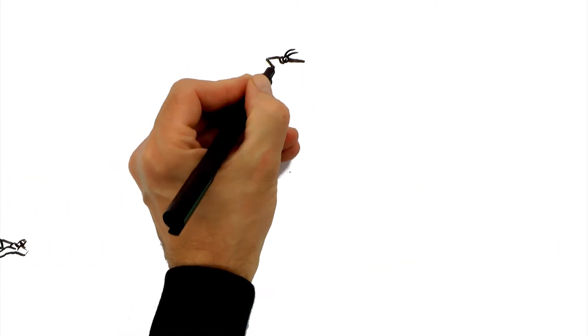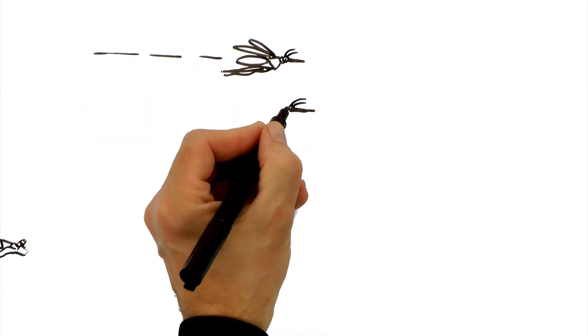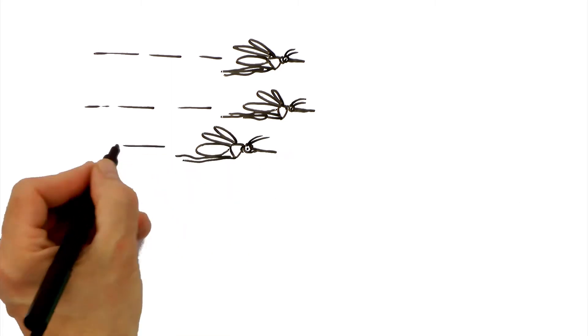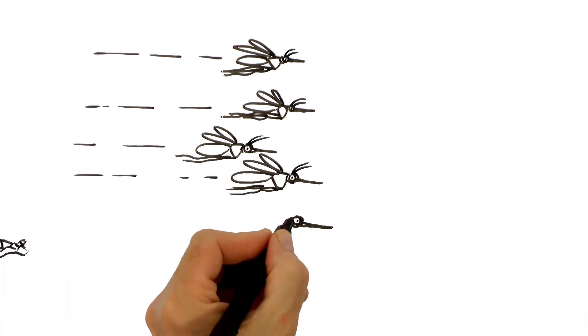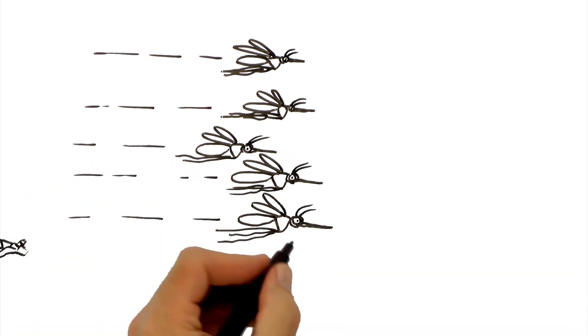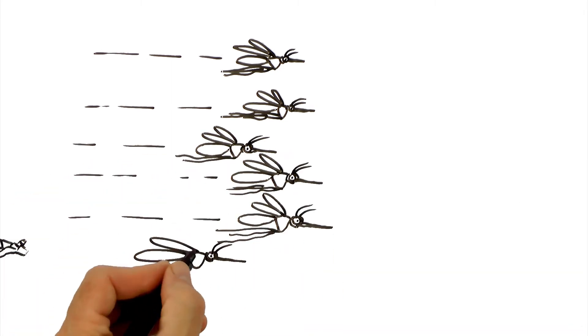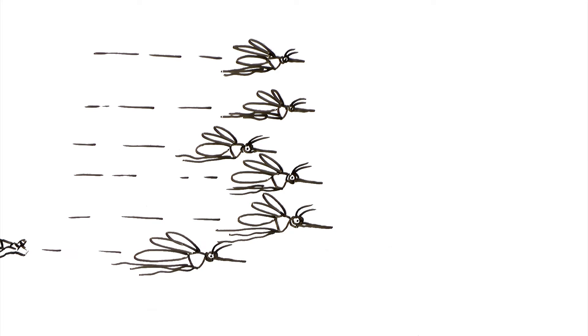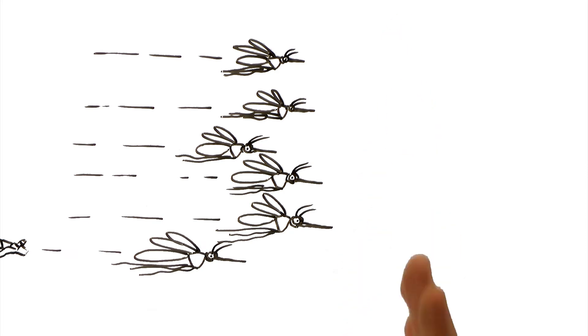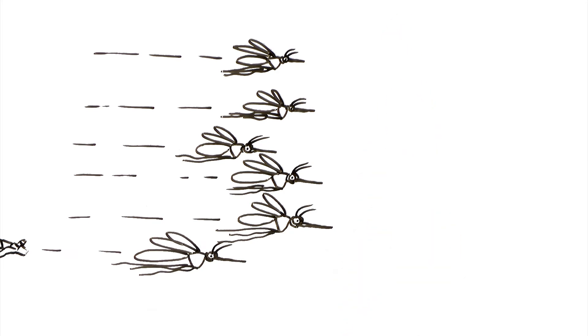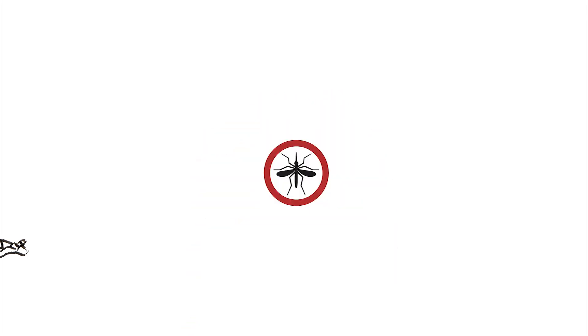Because malaria is transmitted by mosquito vectors, we call it a vector-borne disease. One of the most effective ways of stopping the disease is controlling the vector that transmits it. It's simple, really — no mosquito, no malaria. That's the essence of vector control.